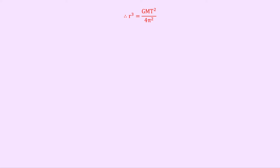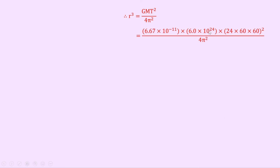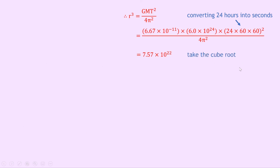Substituting in the numbers, we get 6.67 times 10 to the minus 11 times 6.0 times 10 to the 24 times 24 times 60 times 60, where that last term converts 24 hours into seconds for our period, all divided by 4π squared. Putting that into your calculator should give 7.57 times 10 to the 22. Notice that's r cubed, so we need to take the cube root of each side. We get r equals 4.23 times 10 to the 7 metres.